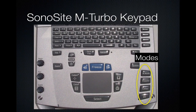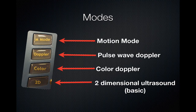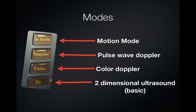There are several modes the M-Turbo can provide. M-mode, known as motion mode, will not be discussed here. Doppler allows you to measure velocity of flow. Color allows you to measure presence and direction of flow. 2D is two-dimensional ultrasound, or basic gray-white ultrasound. Whenever you are in any other mode and want to clear the field to resume scanning in black and white, 2D is the button you select.